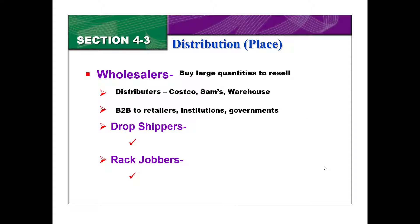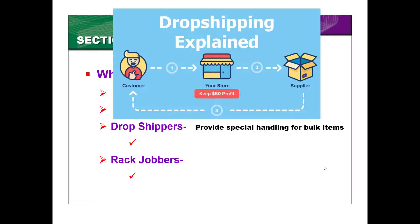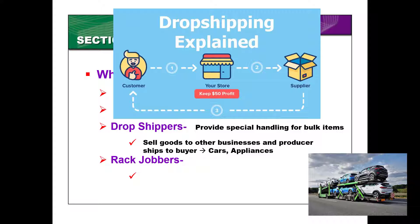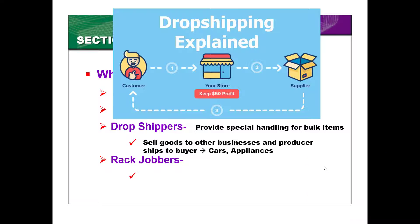Another type of intermediary is what's called a dropshipper. A dropshipper provides special handling for bulk items. For example, you as the customer would go buy an item at the store, and the store, instead of dealing with the shipping or delivery to you, is going to hire out a dropshipping company that then ships it directly to you. These are generally bulky items, like cars — if you've ever seen the big trucks full of cars — or appliances. If you've ever heard of the website AliExpress, that's a dropshipper. Sometimes they can be smaller items, but they are the company that does the shipping and delivery to the customers.